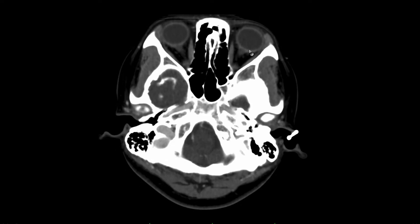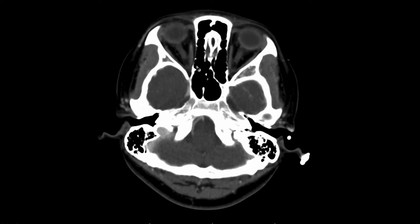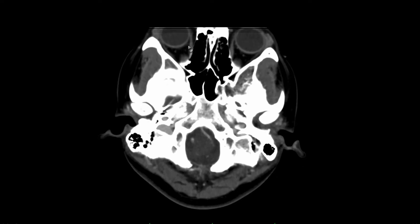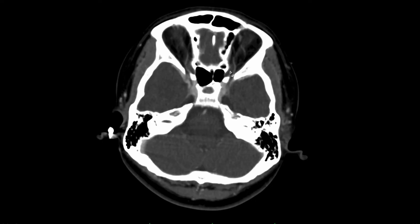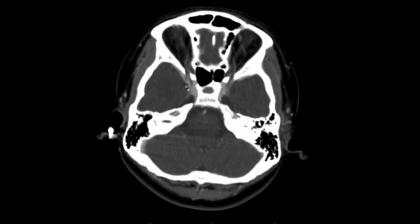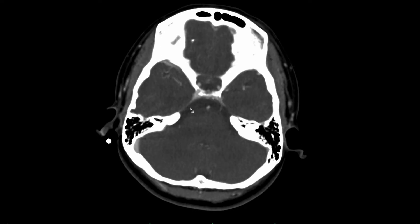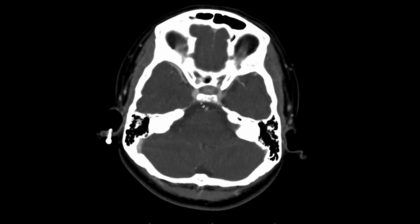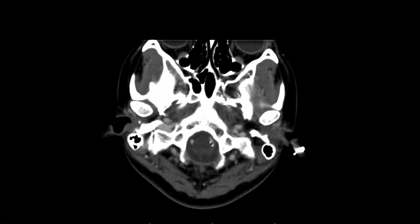We look for secondary features arising from dural venous sinus thrombosis, which would be intracranial hypertension. Patients with intracranial hypertension can get papilledema with distention of the optic nerve sheath complexes, which we don't see here. There is no flattening of the sclera. They can also get enlarged subarachnoid outpouchings, so we look at Meckel's cave, and we don't see significant outpouching. There is also no tonsillar descent.